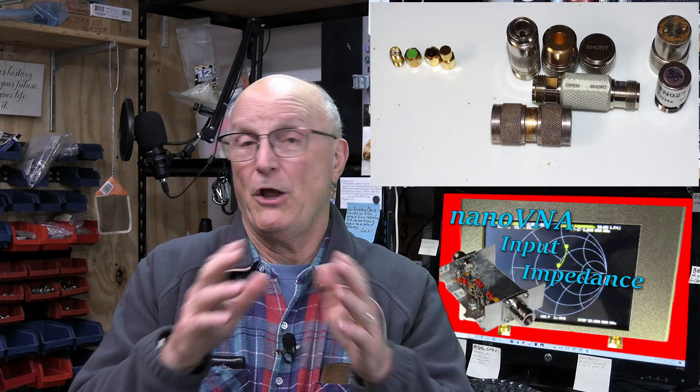Now, the Nano VNA has SMA connectors. The filter has N-type connectors. Now, I have two sets of calibration standards. I have the SMA standards that came with the Nano VNA and I have N-type. So what kind of cables do I have? Well, I have these cute little blue cables with SMA connectors on each end. I also have cables with SMA on one end and BNC on the other. Now, I could use either of these with the adapters that I have. Now, the simplest would be to convert everything to N-type and calibrate with the N-type standards. But I want to be able to demonstrate how to do a port extension in this video.